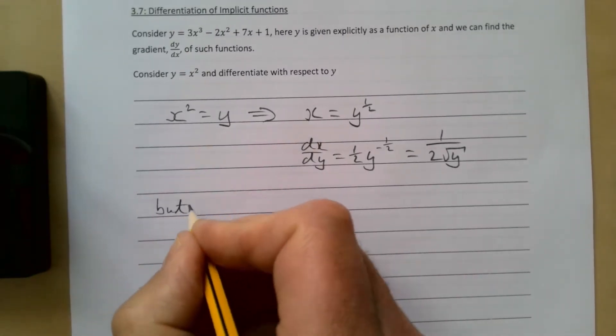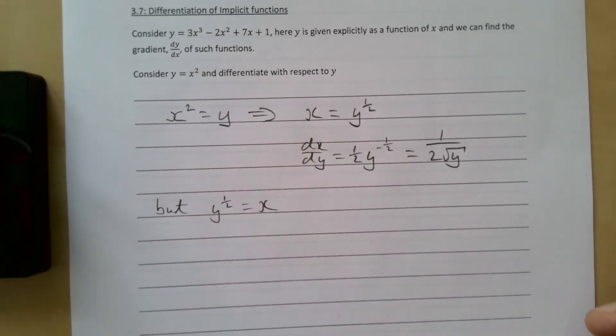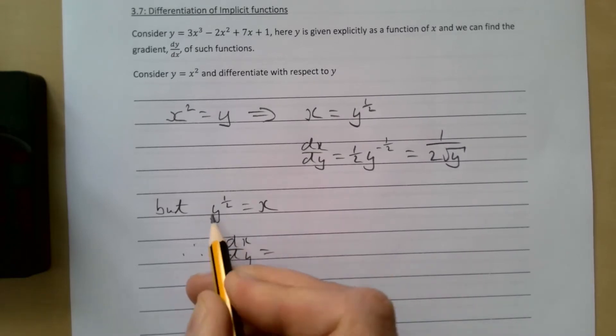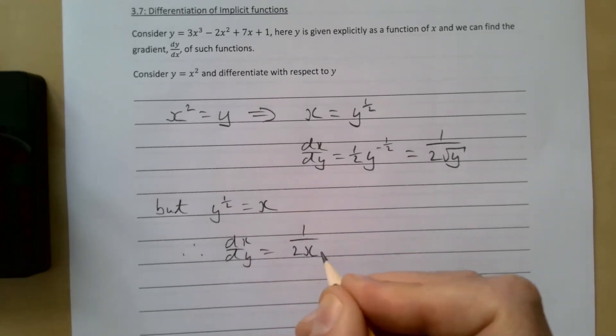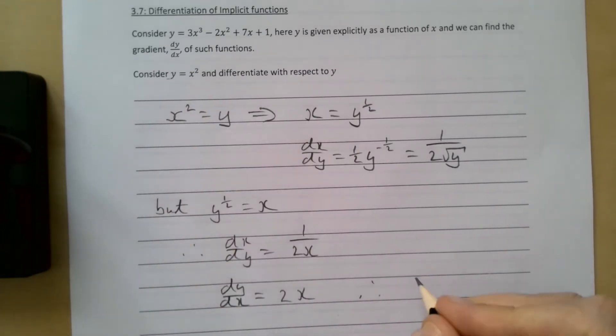But we already know that y^(1/2) = x, so dx/dy becomes 1/(2x). If we flip both upside down, we get dy/dx = 2x, which we could have done on the very first line. This shows us that dx/dy is the same as 1/(dy/dx), and we're going to be using that.